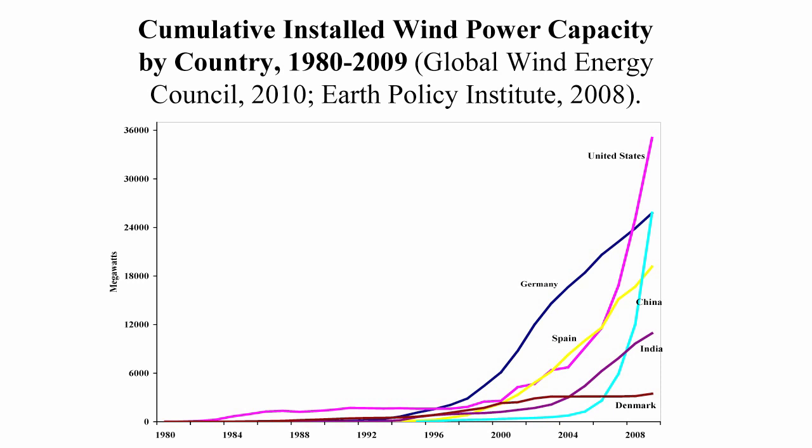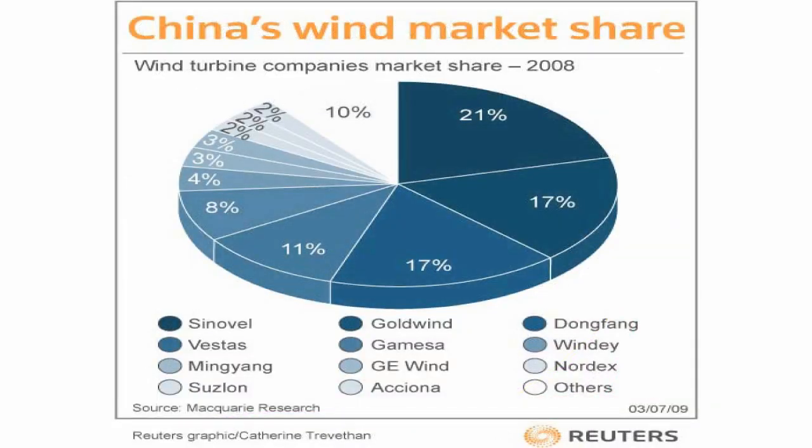By end of 2009, China is already slightly ahead of Germany in wind power capacity and appears to be on the way to surpassing the United States. Previously, the domestic wind market was dominated by foreign turbines from Germany, Spain, and Denmark. But by 2008, the three big Chinese turbine manufacturers already captured more than half of the domestic market.